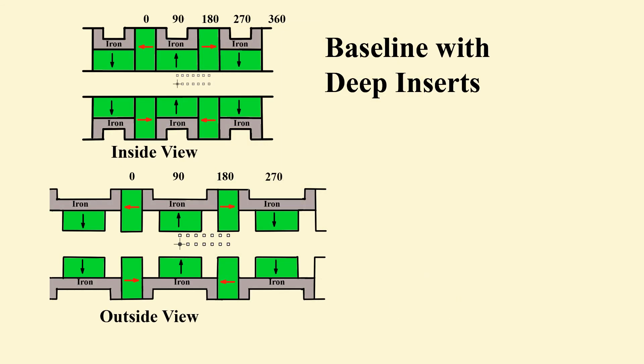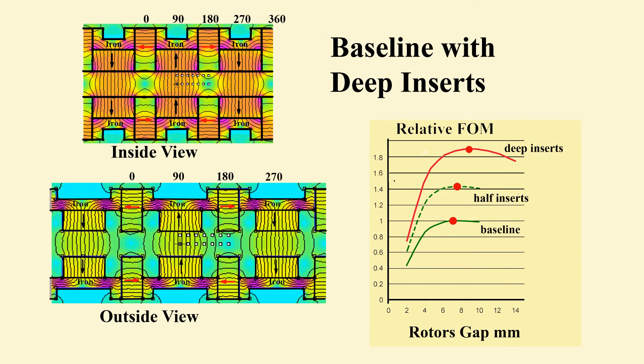This option avoids flux wastage by deeper inserts passing between isolated steel plates. The total flux density map shows that flux wastage is essentially eliminated. The figure of merit approaches double the baseline, indicating around 45% less dissipation.